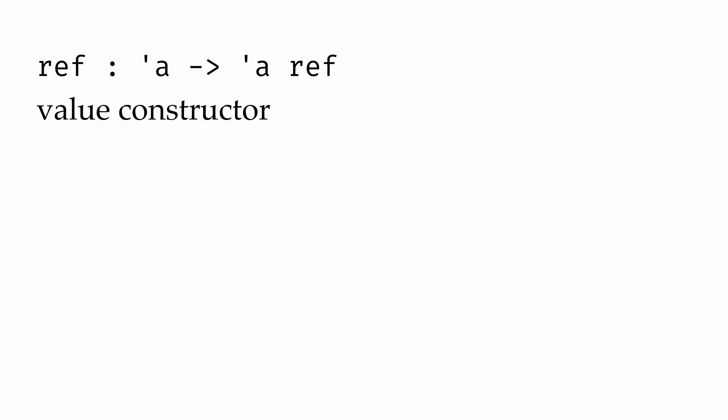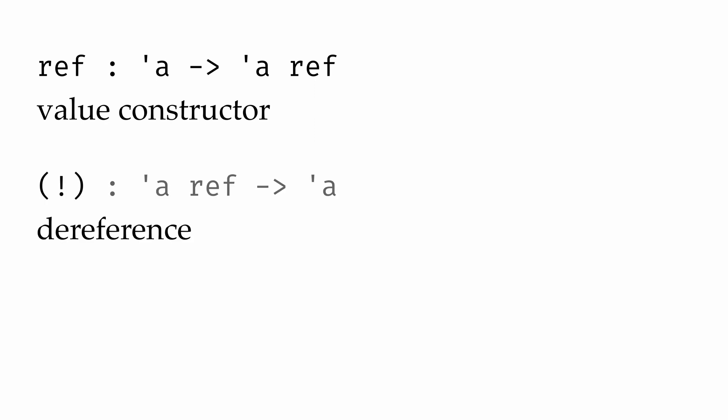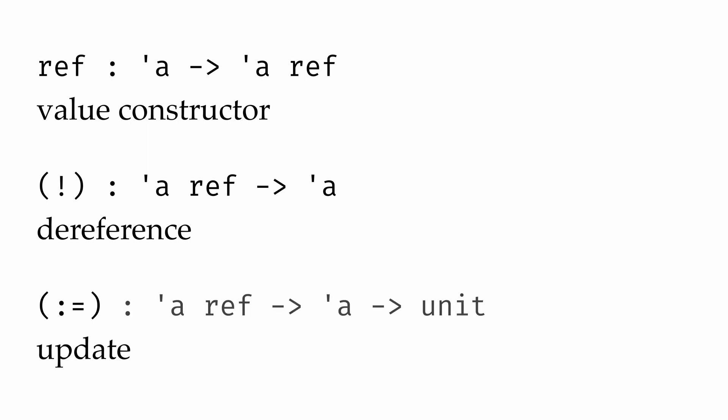Then there's the dereference operator, which does the opposite. Its type is alpha ref to alpha, meaning it takes a reference to a block of memory as input and returns the value of type alpha stored at that location in memory. And then there's the update operator, which takes a reference of type alpha ref and a new value of type alpha and stores the new value in that block of memory.